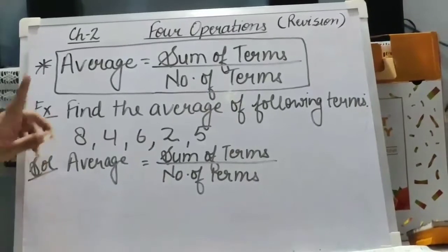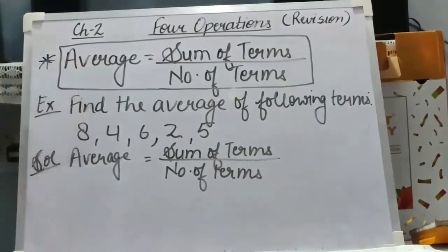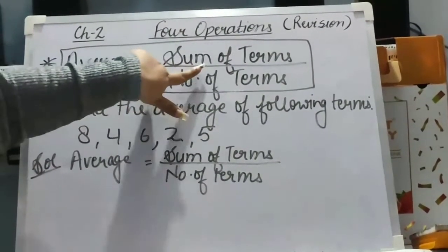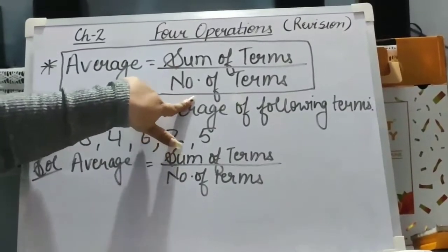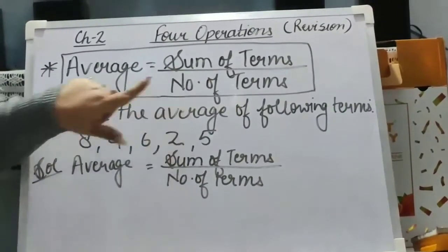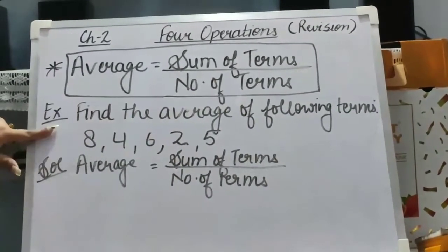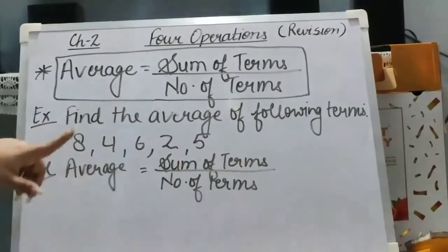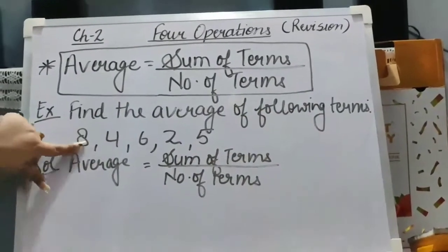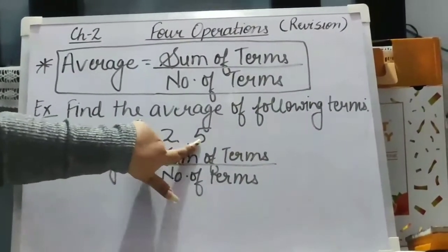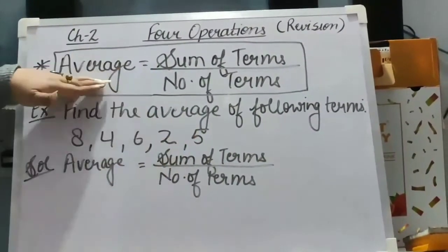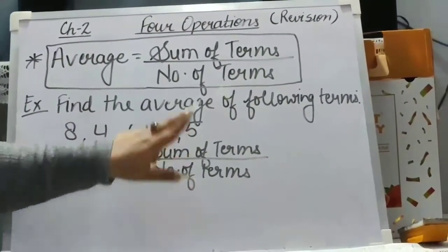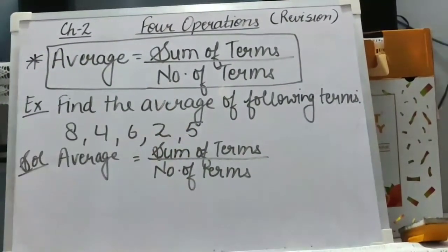At last, we have studied average. The formula for average is: sum of terms upon number of terms. We are going to take one example to explain it. Find the average of the following terms: 8, 4, 6, 2, 5. By using this formula — average equals sum of terms upon number of terms — we can find its average.